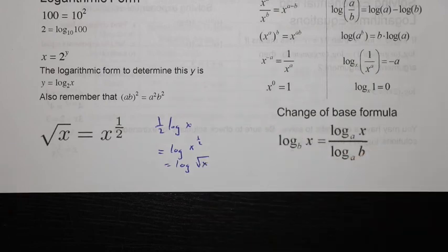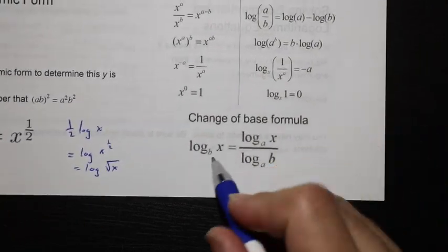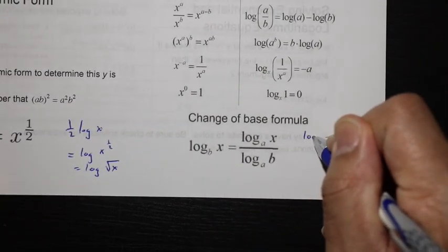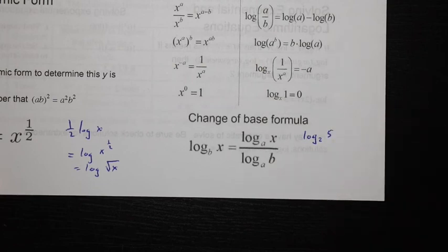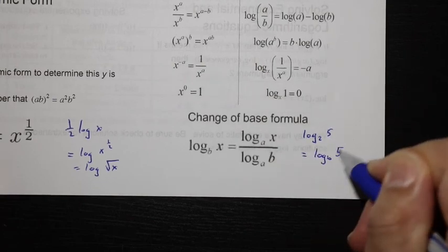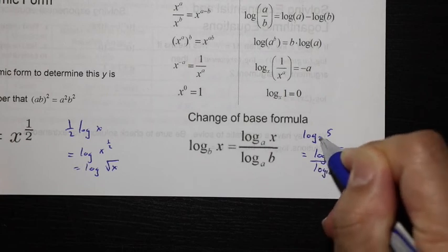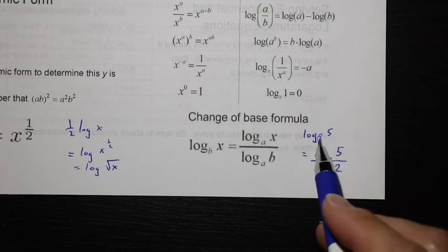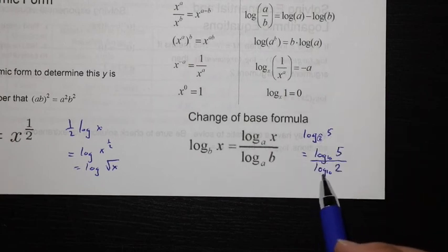Or in other words, it might look like log(√x). Change of base formula is also important. We have something in a different base and we want to convert it. For example, we have log base 2 of 5, but we want to change it to log base 10. We're going to say it's log base 10 of the argument divided by log base 10 of the former base. So log base 2 of 5 equals log base 10 of 5 divided by log base 10 of 2.